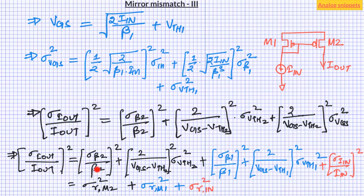So here first two terms are the contribution of output transistor M2. Second two terms are the contribution of bias transistor M1. And the last term is actually the relative variance in input current I_in. So we see that the three components of a current mirror M2, M1 and input current I_in contribute equally to the relative error of current I_out.